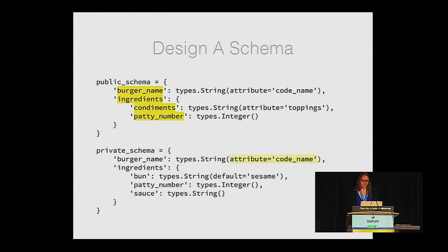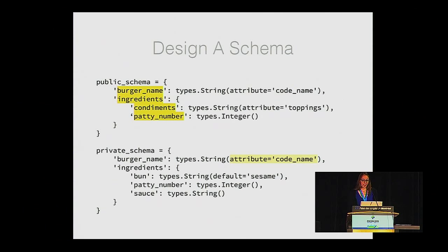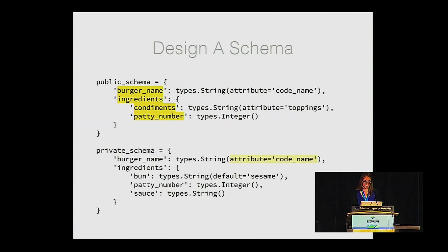Let's see how this looks in code. This is a template for the representation from code. You can create public and private schemas, which allow the data of your API to scale beyond that of your database. This involves creating logical chunks of data to talk about data elements. A little tip: don't force your users to live with the mistakes you made before you knew how to name things properly in your database. So this shows that it says 'code name' in the database, which isn't as clear as 'burger name', which is in the public schema.